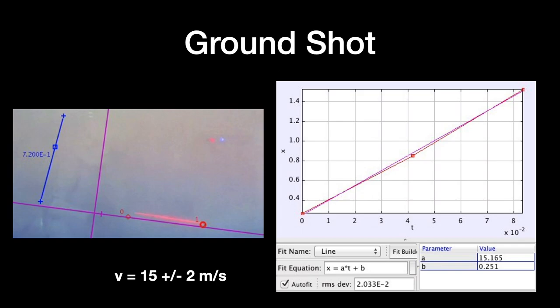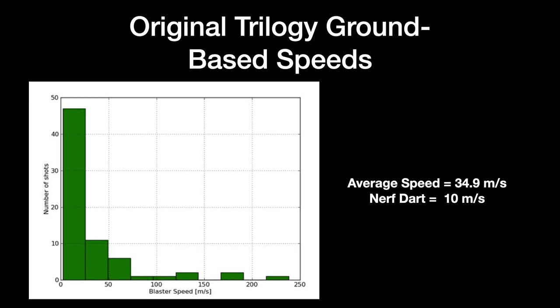For the first ground-based shot, I scaled using the height of a stormtrooper and got 15 meters per second, plus or minus 2 m/s — much slower. Collecting all ground-based shots into a histogram, most blasters are slow, with a few outliers over 200 m/s. The average ground-based blaster speed is 34.9 meters per second. For comparison, a Nerf dart is about 10 m/s — so blasters are Nerf-ish, but faster.